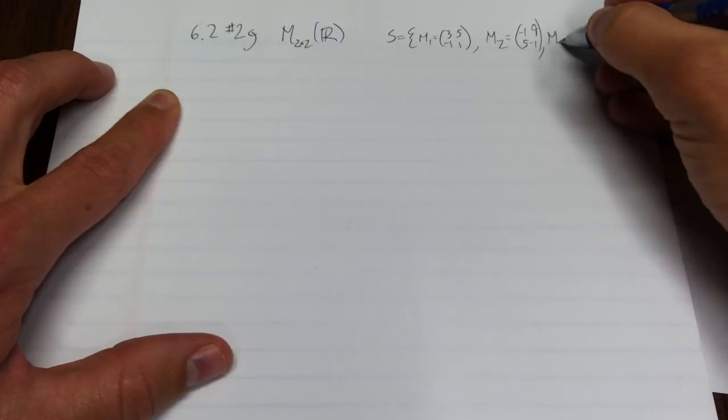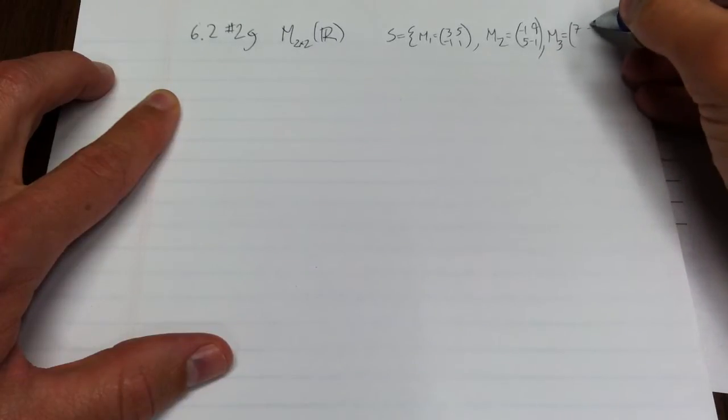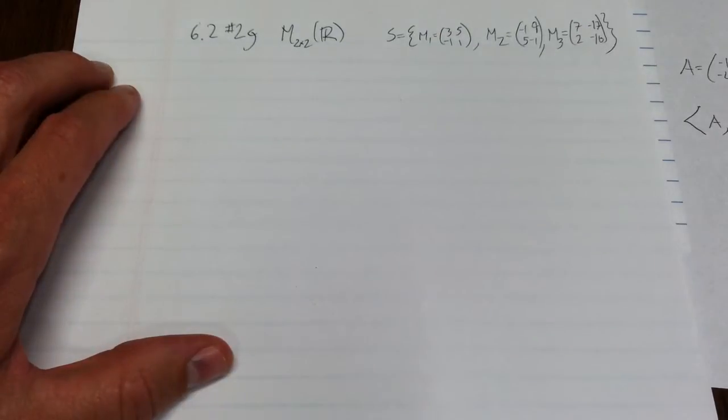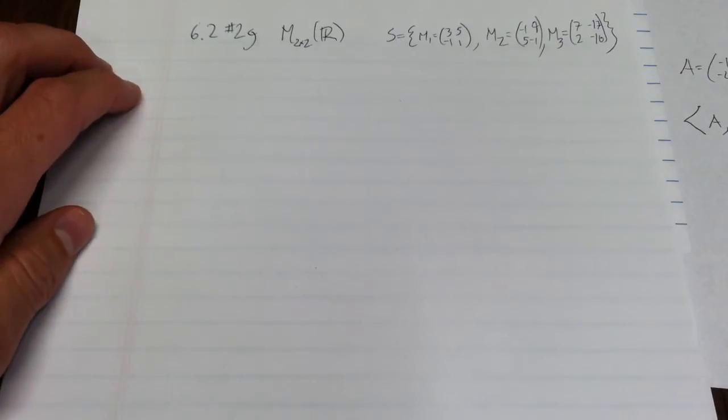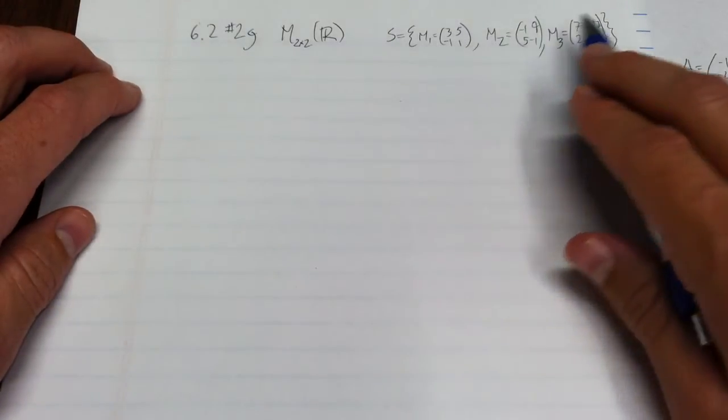And m3, which is (7, -17, 2, -16). So that's my set. My first job is to orthogonalize these.